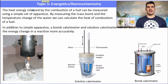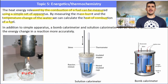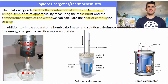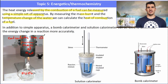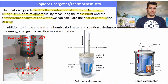Now let's look at how we measure energy changes in the lab. We measure energy changes using a simple set of apparatus known as a calorimeter. We measure the change in temperature of water, and if we know how much fuel we've burnt, we can work out the heat of combustion. A spirit burner holds a fuel; a tin can or conducting container holds a known mass of water, and we record the temperature change as the fuel burns and also weigh the fuel before and after to determine ΔH.